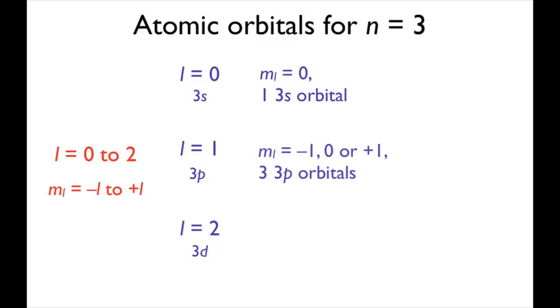When l equals 1, ml can be minus 1, 0, or plus 1. This means there are three distinct 3p orbitals. When l equals 2, ml can be minus 2, minus 1, 0, plus 1, or plus 2. So there are five distinct 3d orbitals.